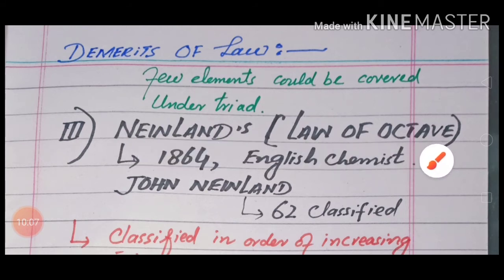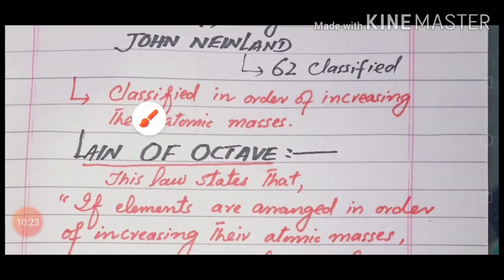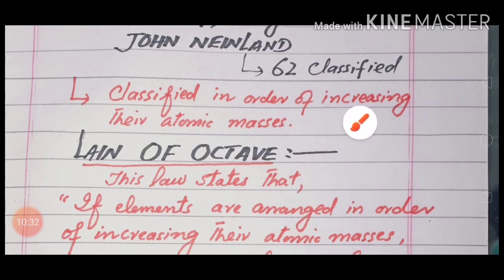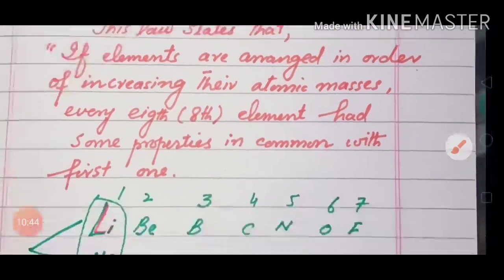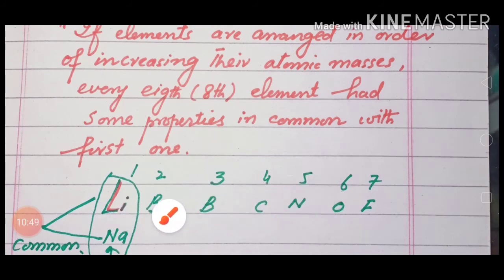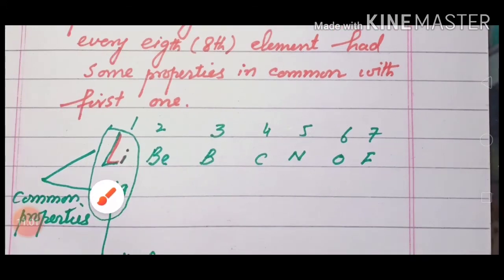After that, Newlands' Law of Octaves was presented. John Newlands, an English chemist, in 1864 classified 62 elements in order of increasing atomic masses. He named this the Law of Octaves. According to this law, he arranged 8 elements in order of increasing atomic masses, stating that every 8th element shares properties with the first element.